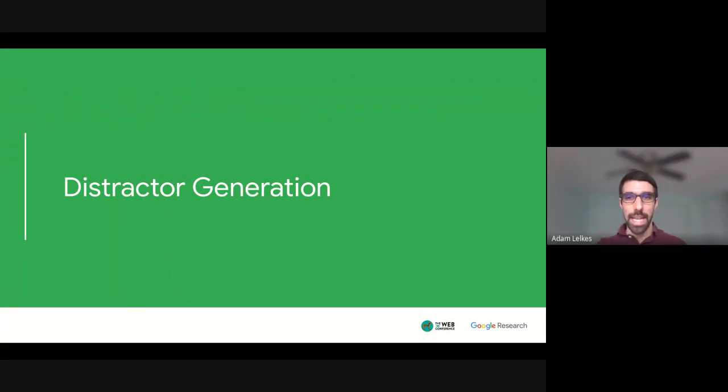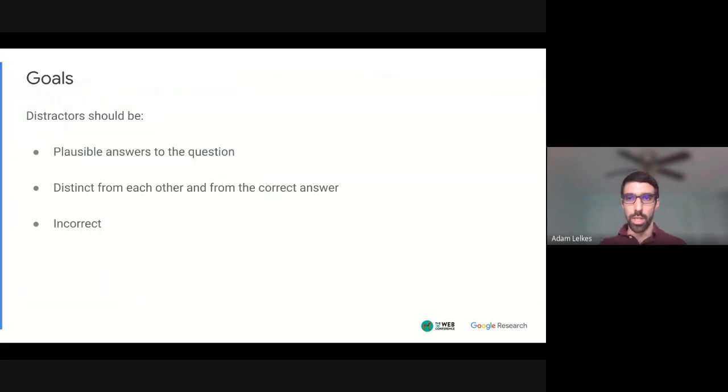Hi, I'm Adam. And I will describe distractor generation. As a reminder, distractor generation is the task of generating the incorrect answer options. And we have three main goals here in terms of distractor quality first, that distractor should be plausible answers to the question to make the question not trivially easy. Also, they should be distinct from each other and from the correct answer. And finally, in case the question has more than one potential correct answer, we also want the distractors not to be correct answers themselves.